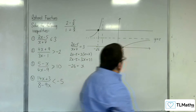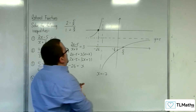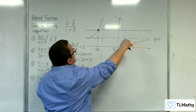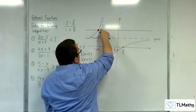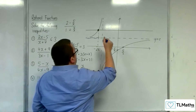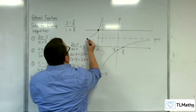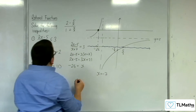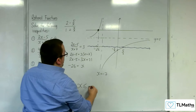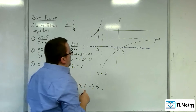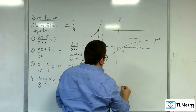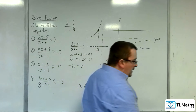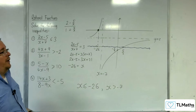Now interpret the inequality. Where is the graph below y equals 3? It's below it here for that region, and it's below it all of there. The only bit that it's not is in between minus 26 and minus 7. So the solution to the inequality is x is less than or equal to minus 26, or x is greater than minus 7. You can't have greater than or equal to minus 7 because that's where the asymptote is. So once you've sketched everything, interpreting the inequality is pretty straightforward.